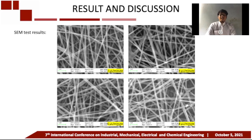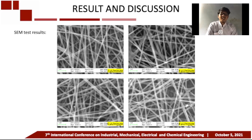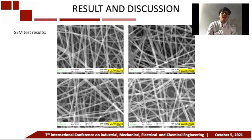From the SEM test result images, it can be observed that the lower the solution flow rate used, the smaller the average diameter of the resulting nanofibers. These results also confirm previous research which explains that the use of a rotating collector will produce nanofibers with good uniformity.